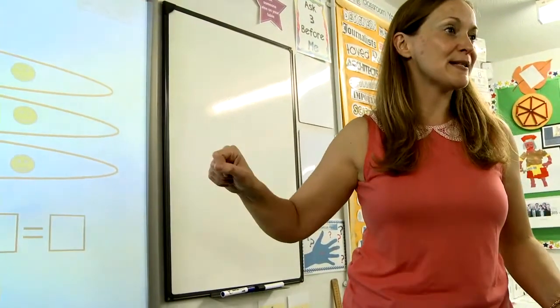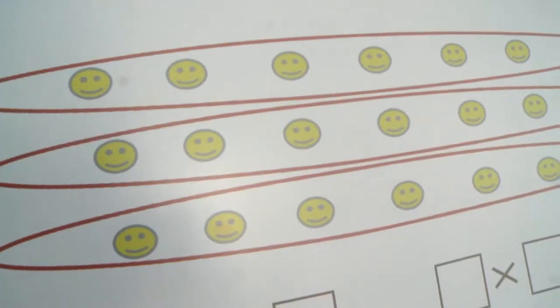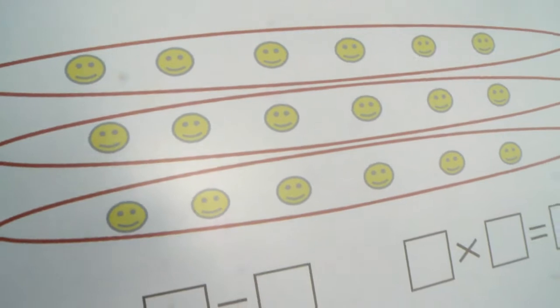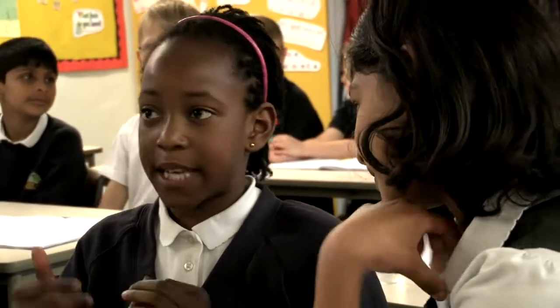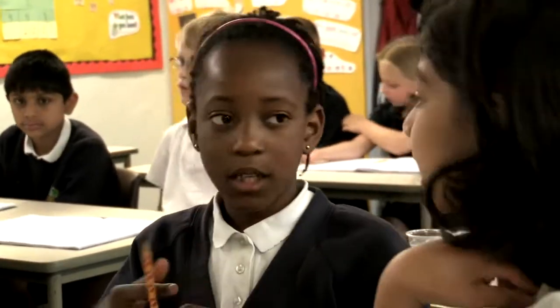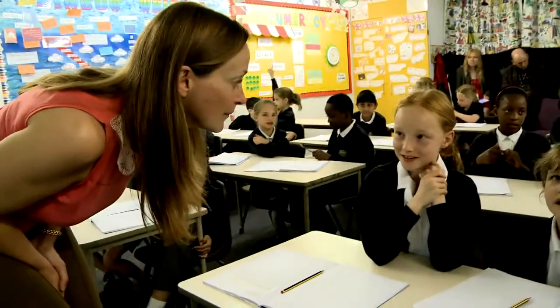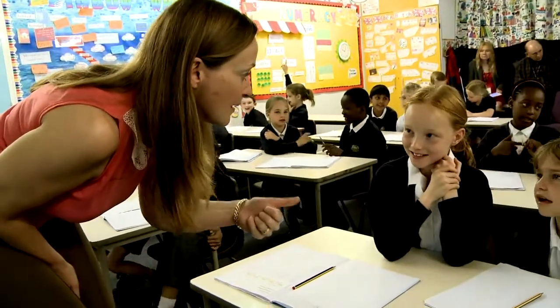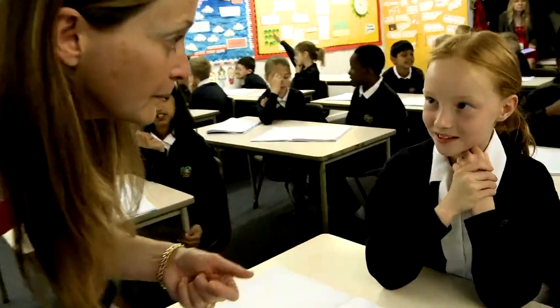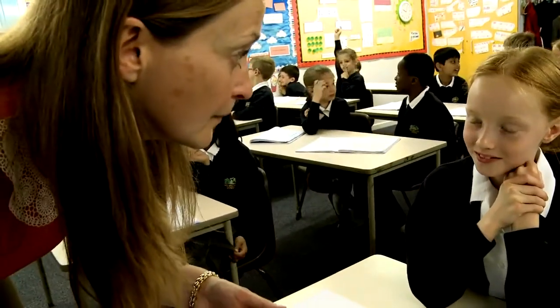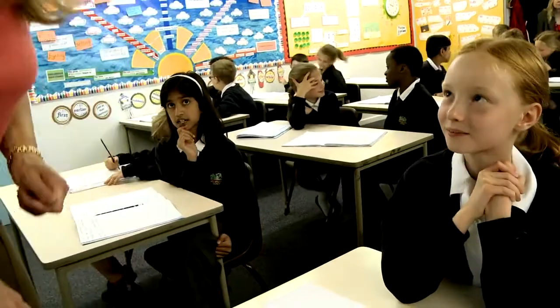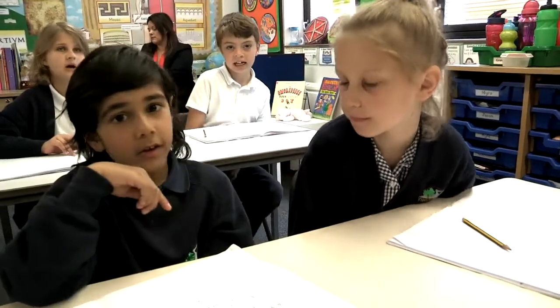They were able to very quickly identify groups and rows. Tell your learning partner — what is that as a multiplication sentence? Three times six equals 18. Or six times three equals 18.